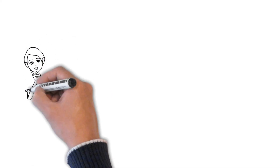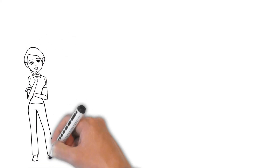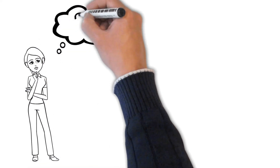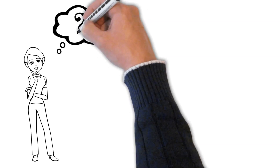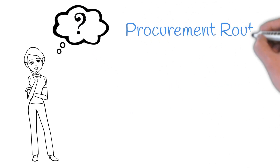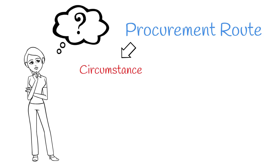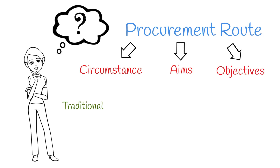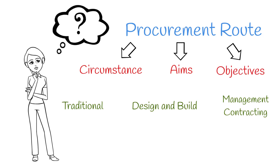A choice every employer will have to make when considering a construction project is what procurement route to choose. And if you're a QS, it's often your job to advise the client on what route they should take. The preferred decision will differ depending on the client's circumstance, aims and objectives. In this video, we're going to compare the four most common procurement routes and explore the pros and cons for each.